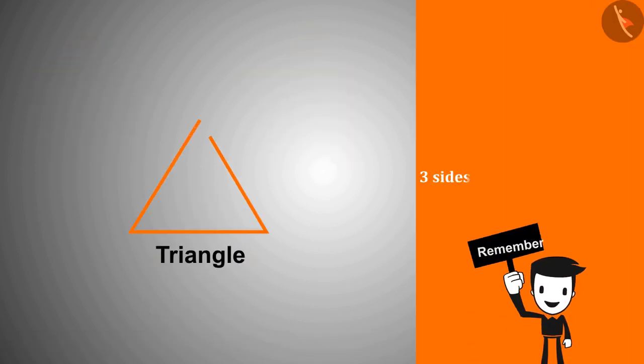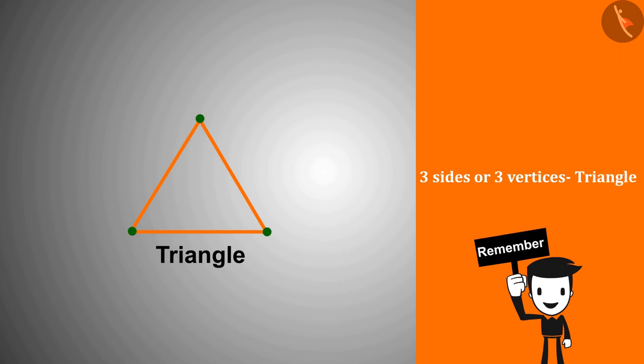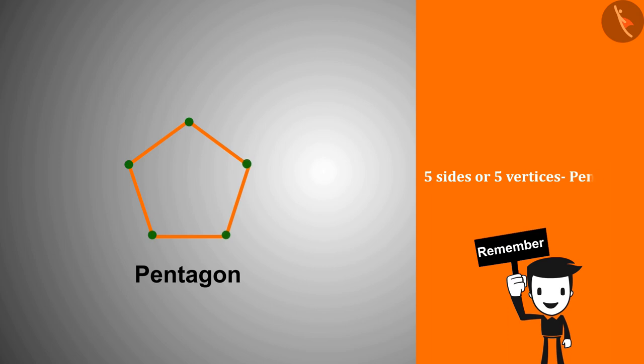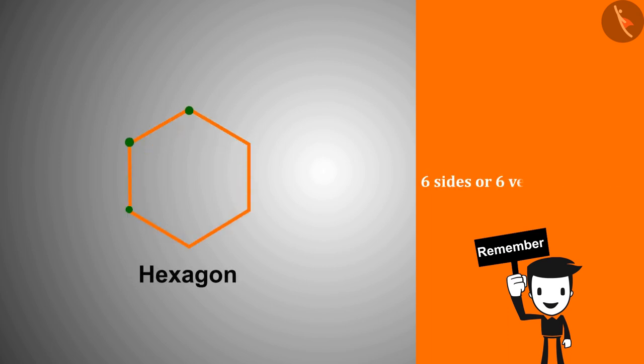A shape with three sides or vertices is called a triangle. A shape with four sides or vertices is called a quadrilateral.